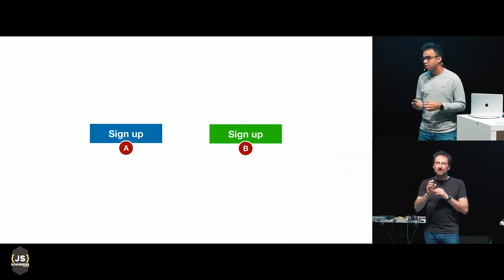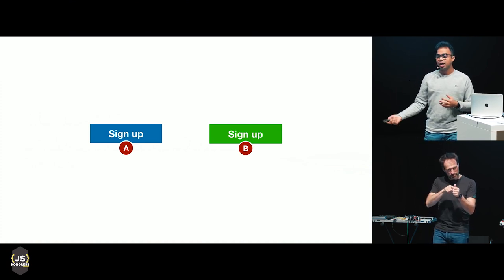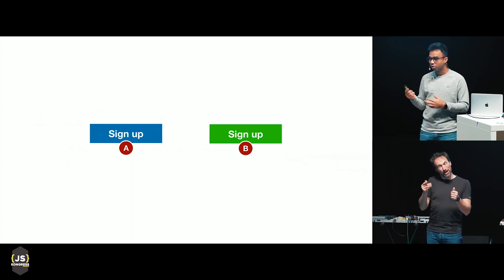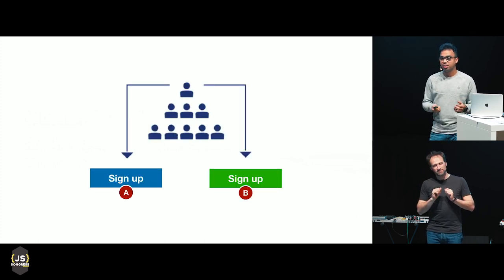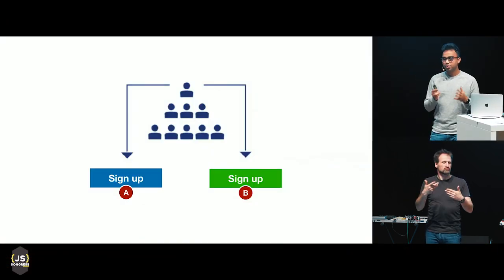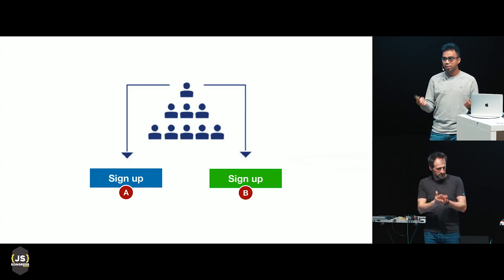To give you an example, let's say you have a sign-up button which has been doing well so far — that's A — and you have a new one, B, which you think would do better, maybe because it's green. What you do is divide your traffic across both designs, show both, and run it for a certain sample size. Based on your metrics, you decide whether to go with A or B. You have two versions of the same feature and you test which one did better.